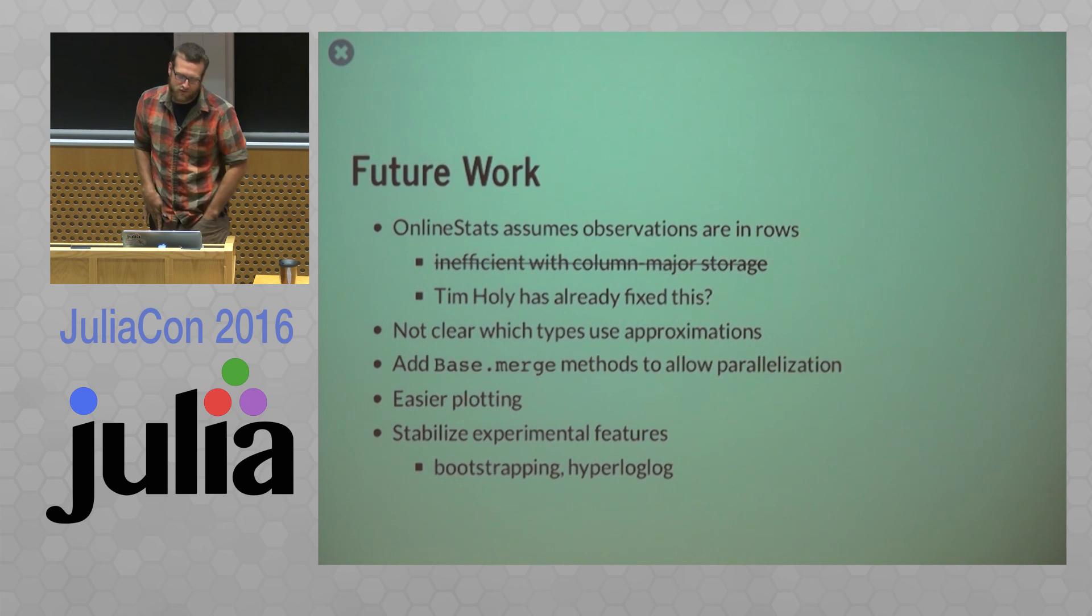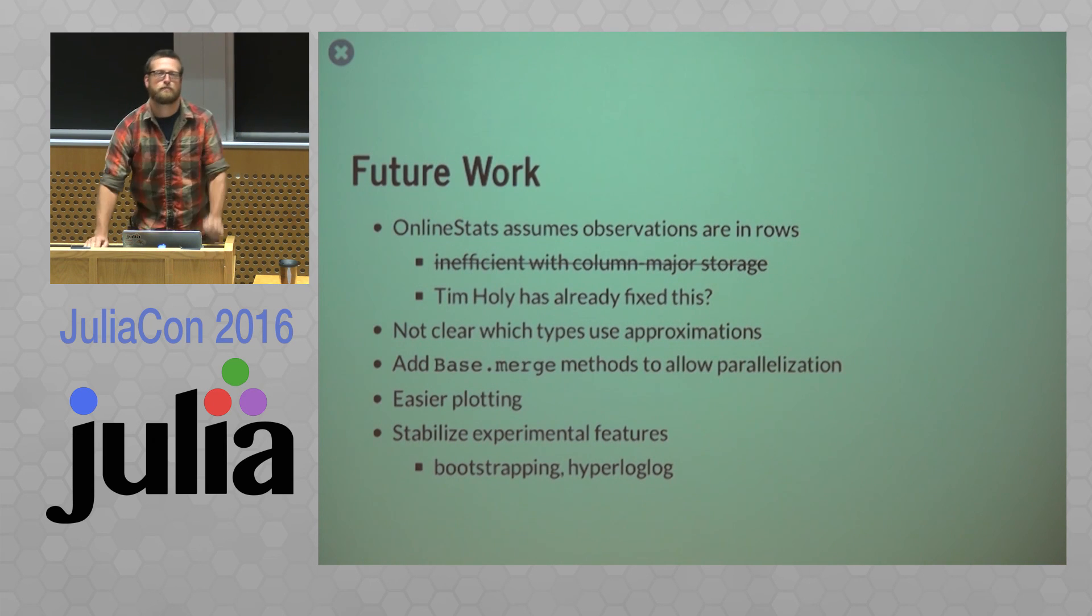One thing I don't like is that it's not clear which of my types are using approximations versus which are exact. I would like to add base merge methods in to allow for parallelization. So say you can fit linear regression on, I don't know, two different clusters on different data sets. How do you combine those two things afterwards? So I have to think through intelligent ways to like combine stochastic gradient descent models.